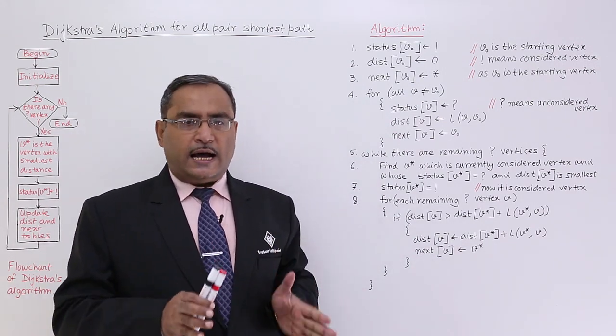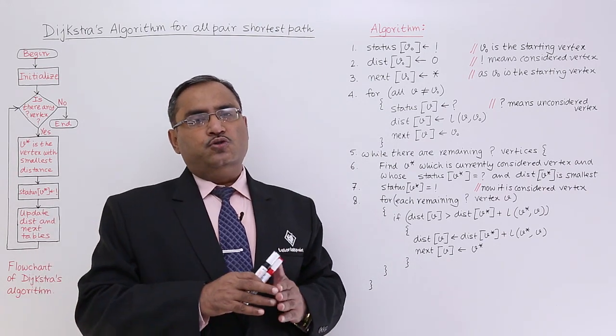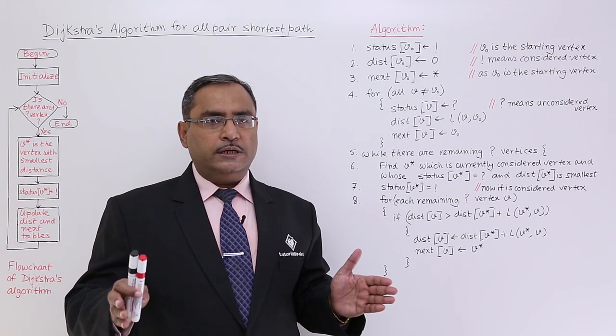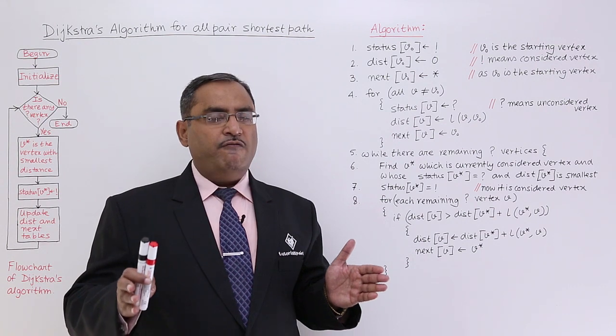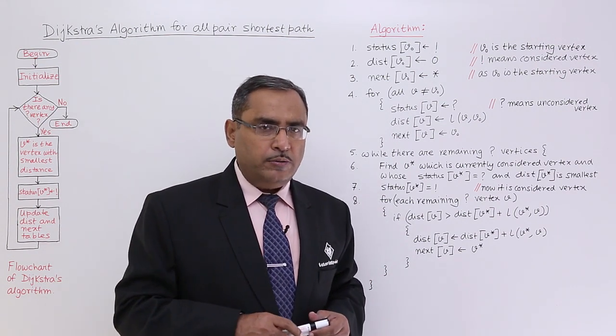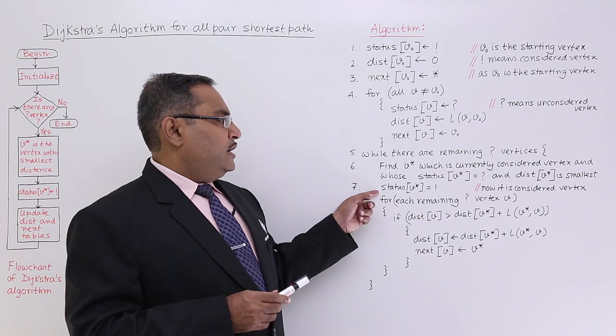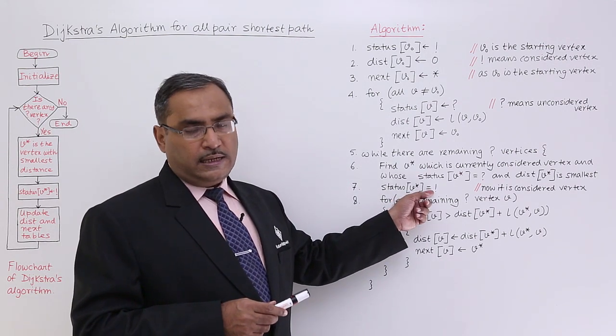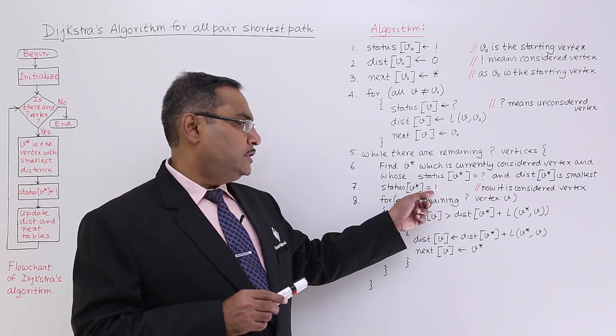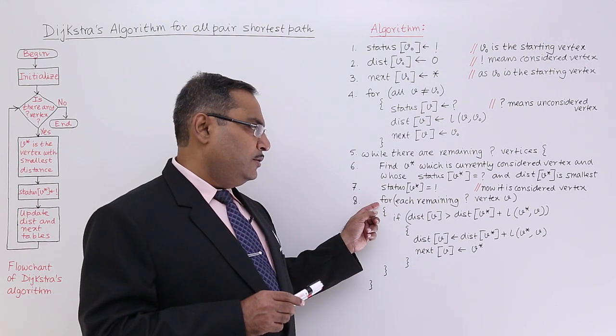If there is any tie because let us suppose 2 vertices are there unconsidered but having the same dist values, in those case the tie will be broken arbitrarily. So status V star is equal to exclamation, now the vertex has got considered, and now we are checking with the remaining question mark vertices.